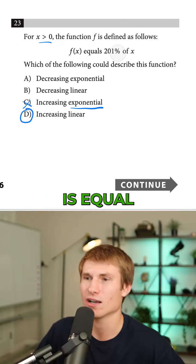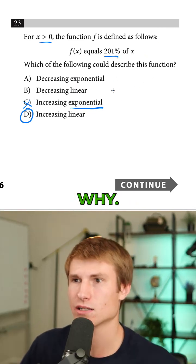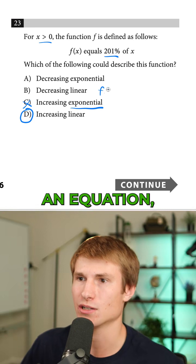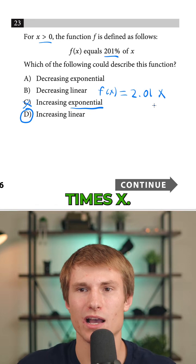The reason why is because if f of x is equaling 201% of x, it's going to scale linearly with x. And here's why. If you were to write this out as an equation, it would be f of x is equal to 2.01 times x.